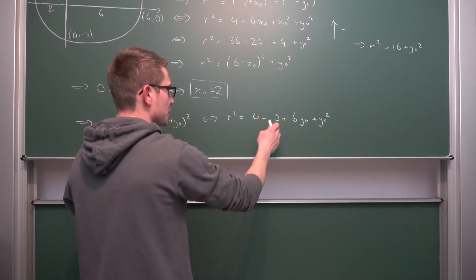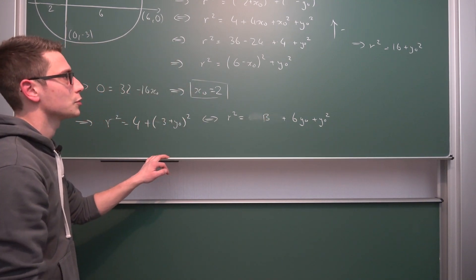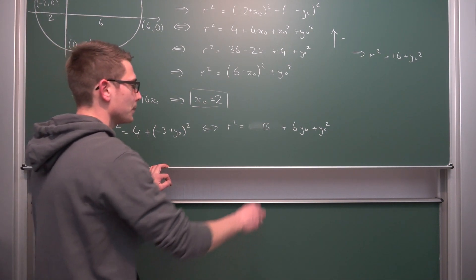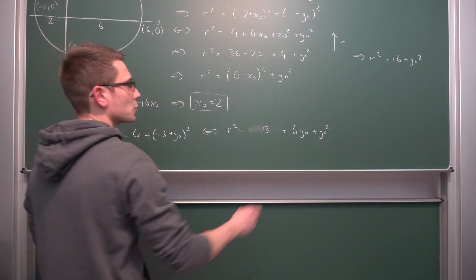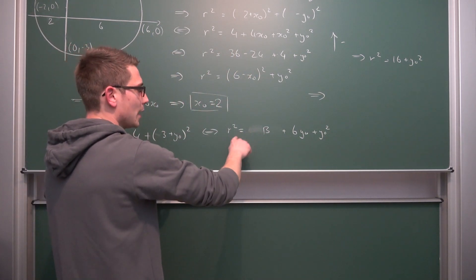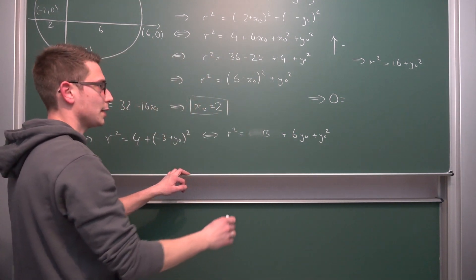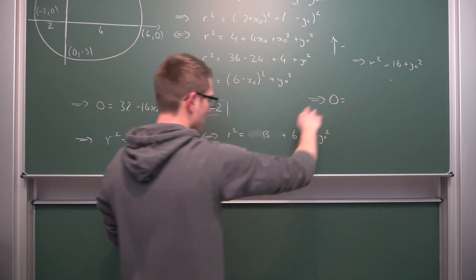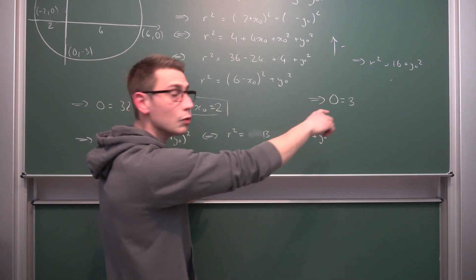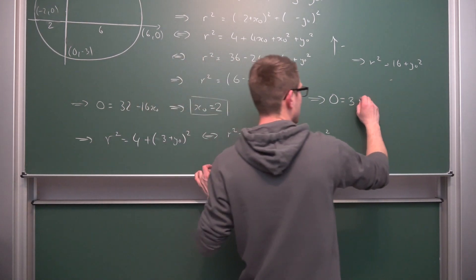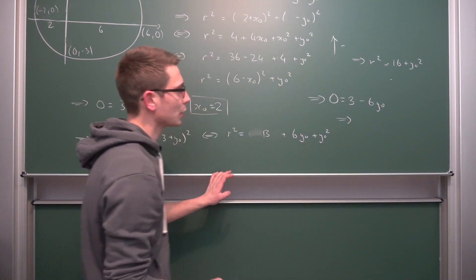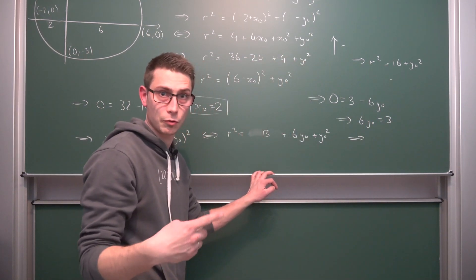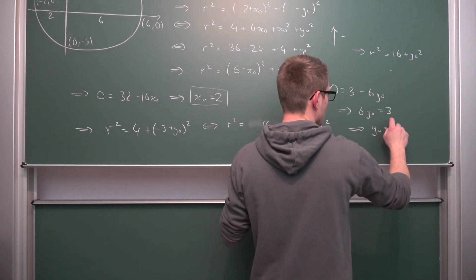Just like before we can factor out negative 1 here, giving us overall that r squared is equal to 4 plus, so this is going to give us by the binomial theorem 9 plus 6y0 plus y0 squared. 4 plus 9 is going to give us 13 in the process. Now we have two more equations that we can basically add together or subtract from one another. Now if we were to subtract these two from one another, what we are going to get is, r squared is going to cancel out once again. So 0 is equal to, then we are going to get y0 squared and y0 squared is going to cancel out in the process. And also 16 minus 13 is going to give us just 3, and also 0 in this equation minus 6y0 is going to give us negative 6y0. Meaning overall we can solve for y0, giving us that 6y0 is equal to 3, or in other words y0 is equal to 3 divided by 6 or 1 half.